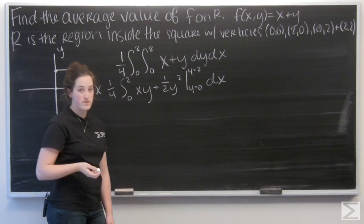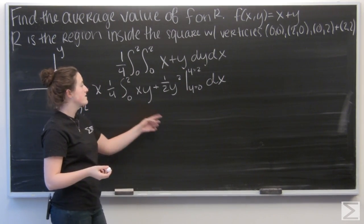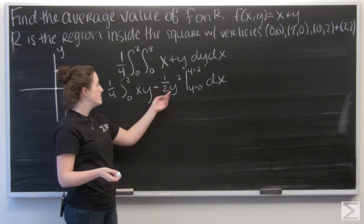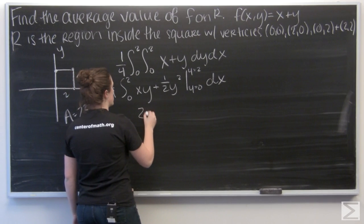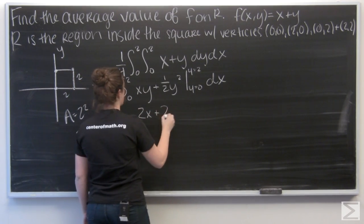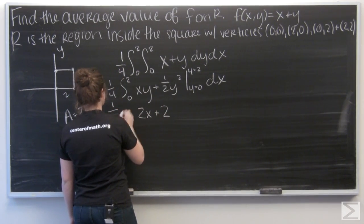So let me start by plugging in a 2 in for y. I'm going to get 2x plus 2, right? 2 squared is 4, divided by 2 is 2. Bring that to this stuff down.